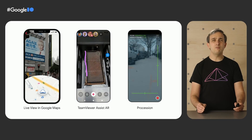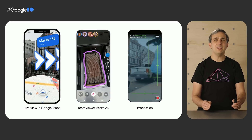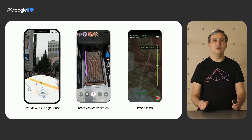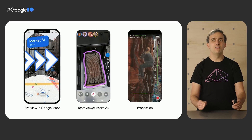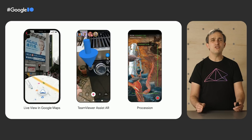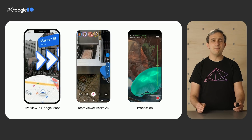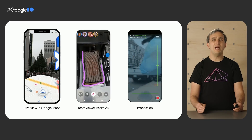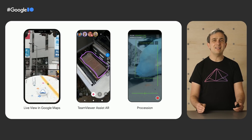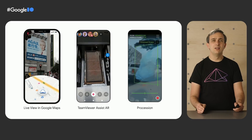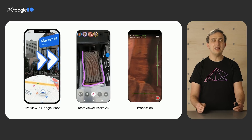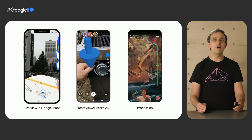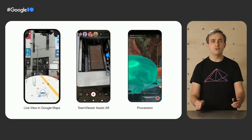The virtual objects get drawn on top of the camera image, and when drawn correctly, they blend in, almost like they're actually there. This augmentation of reality allows apps to show information in a more natural, more human way, such as pointing exactly down the street to turn on, allowing someone to remotely help you by adding 3D annotations, or immersing yourself in a virtual art piece.